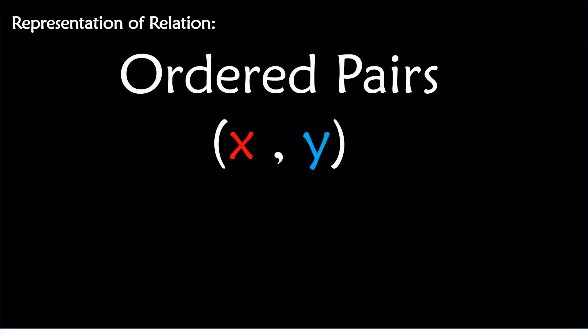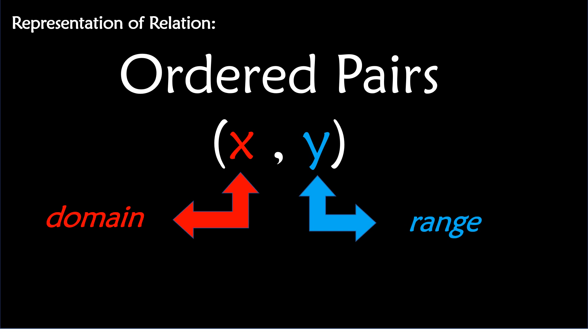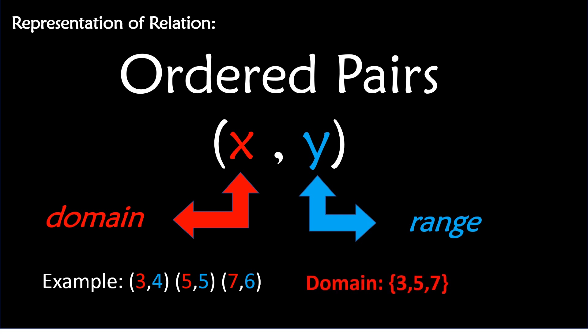This is the representation of relation using ordered pairs. A relation is a set of ordered pairs. The set of all first coordinates is called the domain, and the second is called the range. For example, in these ordered pairs (x, y), we have (3,4), (5,5), and (7,6). The domains are 3, 5, and 7, while the range values are 4, 5, and 6.